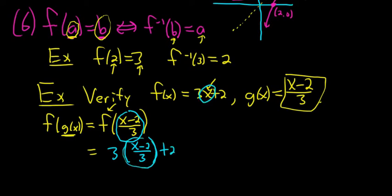The 3's cancel, so we get x - 2 + 2. The 2's cancel, and boom, like a pro, we get x. So it checks.